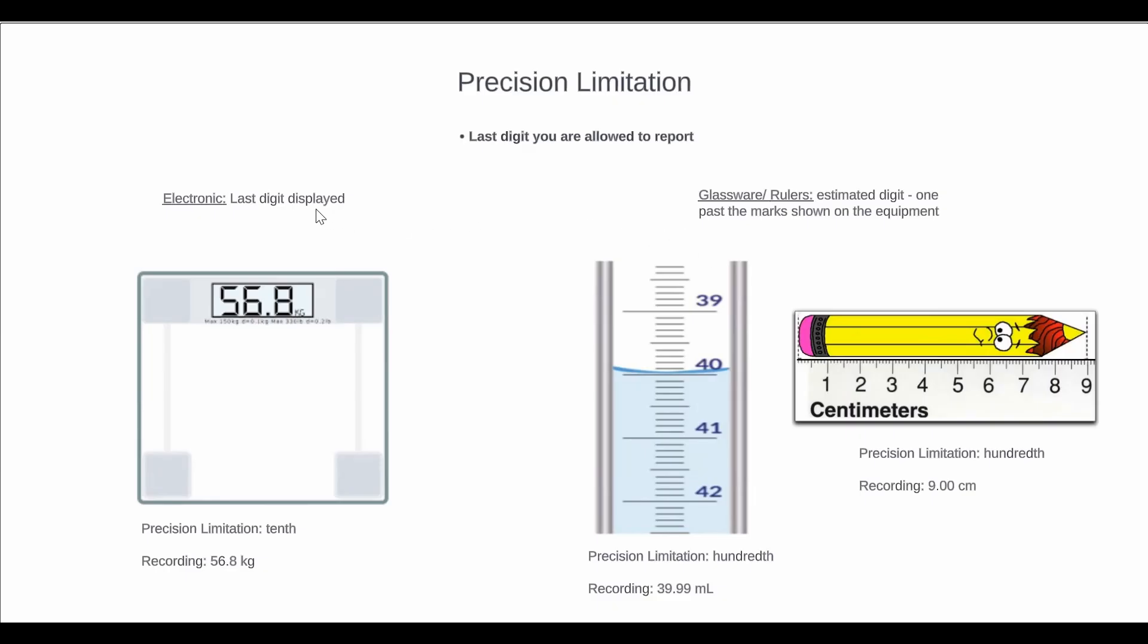Let's look at electronic first. For electronic, you're allowed to record the last digit displayed. So for example, on this electronic scale, you see 56.8. This is to the tenths, and you're only allowed to record the exact value, 56.8 kilograms.